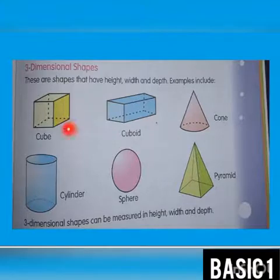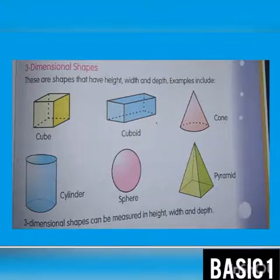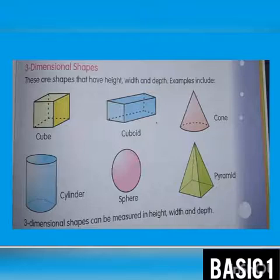We have here a cube, a cuboid, a cone, a cylinder, a sphere, and a pyramid. These are beautiful examples of 3D shapes. A cube is made up of various squares — all the sides are equal. A cuboid is made up of various rectangles. Now let's look at specific properties of these 3D shapes.